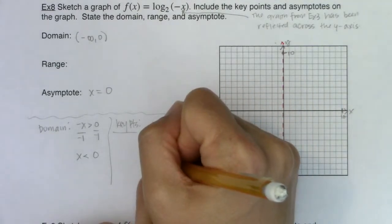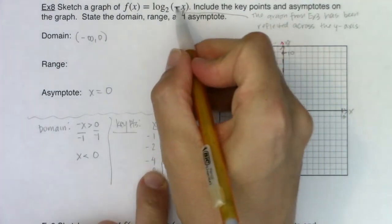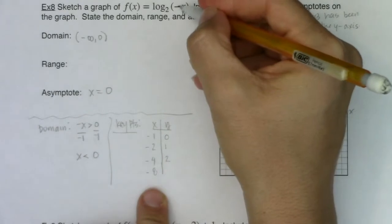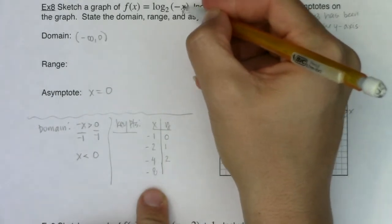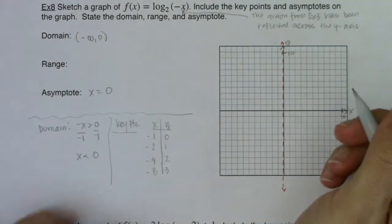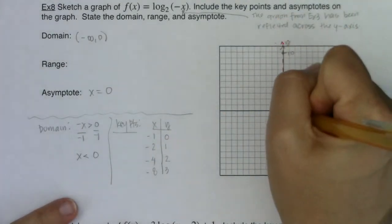And we can keep on going. If I'm plugging in negative four, well, negative of negative four is positive four. Log base two of four is two. And I think you can see when I plug in negative eight, I get a negative of negative eight, and log base two of eight is three. So I get my ordered pairs. Let me go graph these.